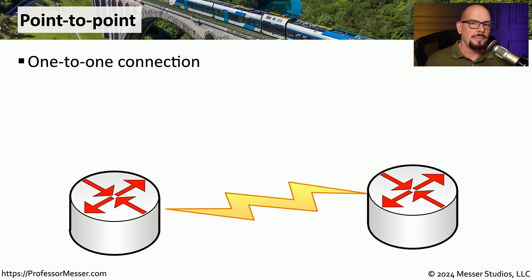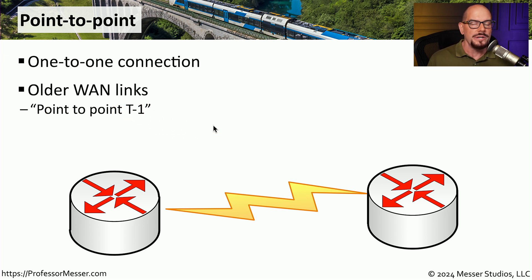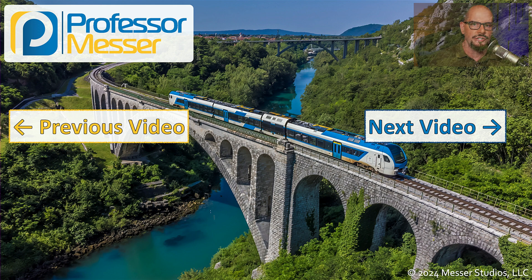When looking around the network, you may find some wide area network connections that are point to point. As the name implies, there is a single point connected to a single point. This was a very common design on older wide area networks where you would use something like a T1 or T3 connection — referred to as point to point T1 or point to point T3. We might also use this design in local area networks; if you work on a campus, you can connect one building to another, and the connection between those two buildings would be a point to point connection.